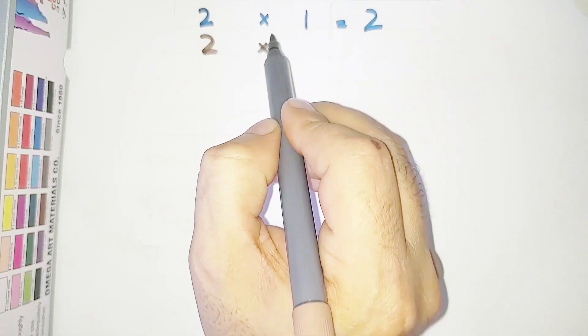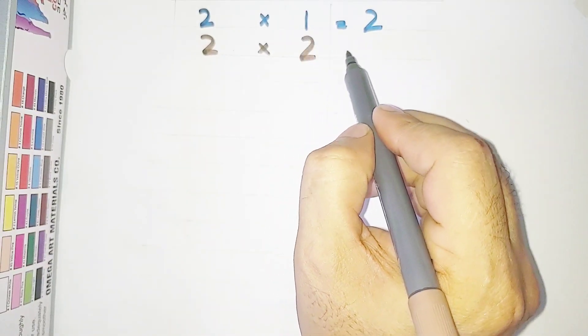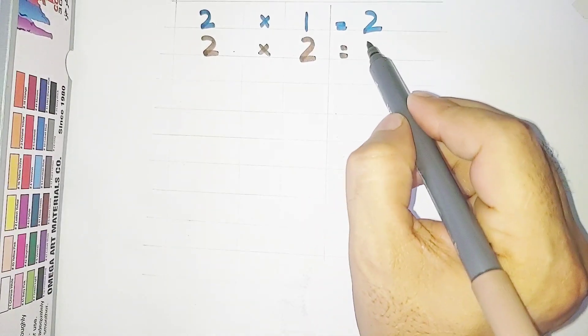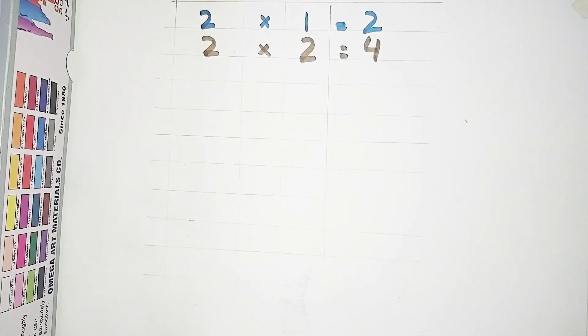2 multiplied by 2 is equal to 4. 2 twos are 4.